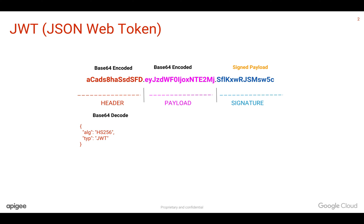When you decode the Base64 encoded header, you will see the result something like this. Similarly, when you decode the payload, you will see the payload contents.